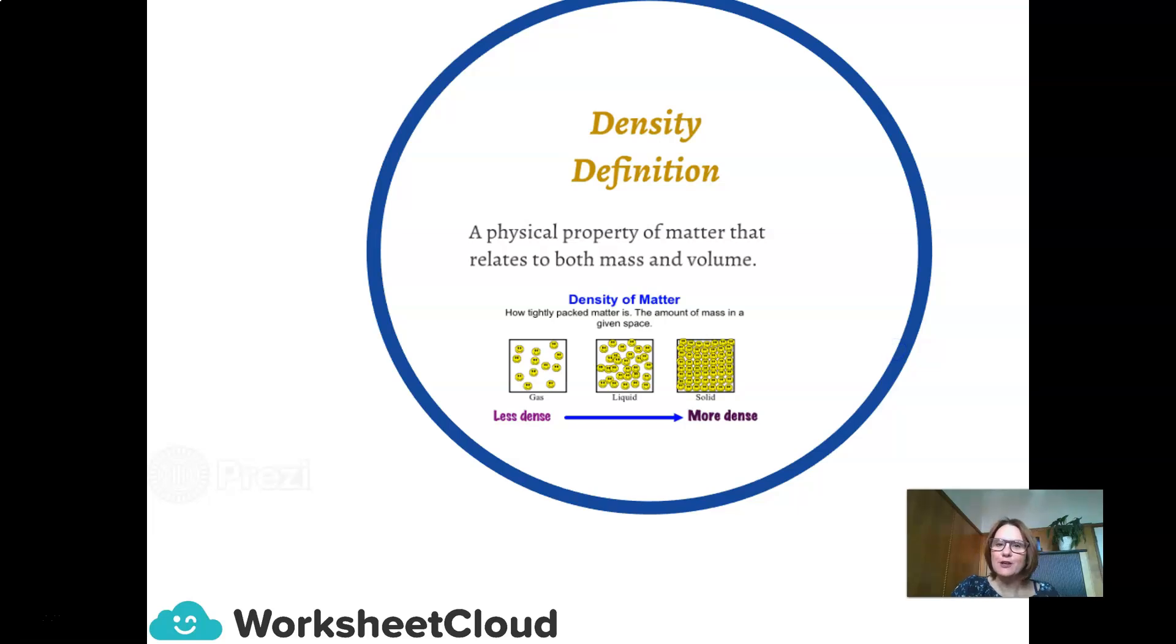Now, today we're going to look at density in quite a lot of detail as we look at the particle makeup of a solid, a liquid and a gas. The density definition is a physical property of matter that relates to both the mass and the volume. How tightly packed the matter is, is the amount of mass in a given space. We are going to look at solids, which are very dense, and compare it to liquids and gases, which are a lot less dense.